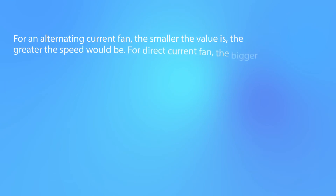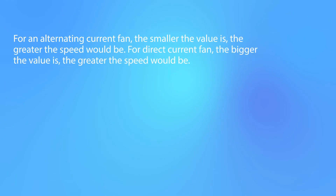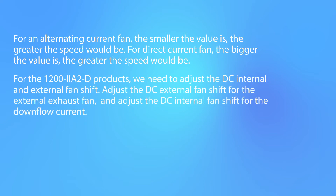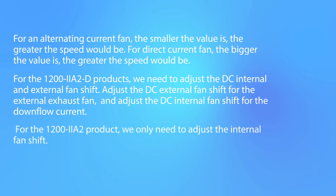For an alternating current fan, the smaller the value is, the greater the speed would be. For a direct current fan, the bigger the value is, the greater the speed would be. For the 1200 2A2D products, we need to adjust both the DC internal and external fan shift. Adjust the DC external fan shift for the external exhaust fan, and adjust the DC internal fan shift for the downflow current. For the 1200 2A2D product, we only need to adjust the internal fan shift.